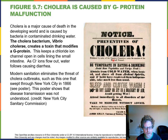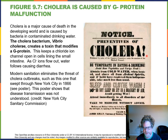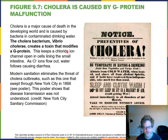A disease called cholera is caused by an alteration in the G protein caused by bacteria. The bacteria creates a toxin that binds to a G protein and keeps a chloride ion channel open in the cells lining the small intestine. When chloride ions flow out of the small intestine, water follows, causing diarrhea.